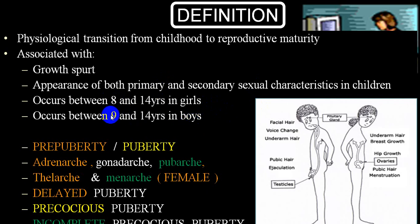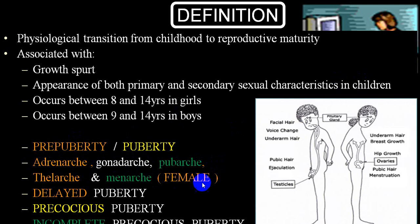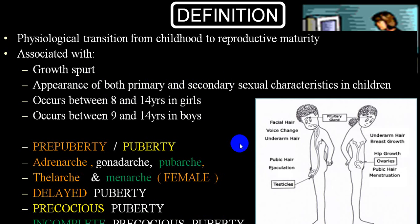In males, puberty is between 9 to 14 years — before 9 is precocious, after 14 is delayed. There are a few terms used: pre-puberty, adrenarche, gonadarche, pubarche, thelarche, and menarche in females particularly. If it doesn't have full development of primary and secondary sex characters, we call it incomplete precocious puberty.